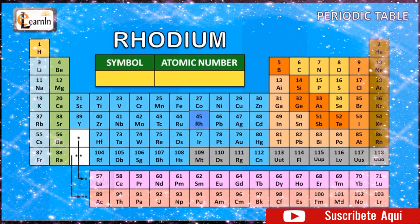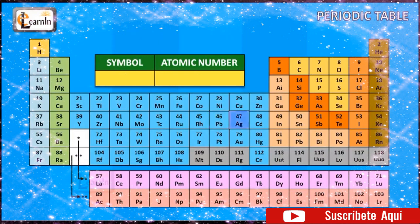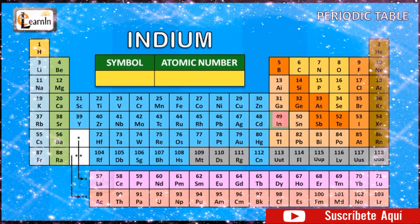The element palladium is represented as Pd and has an atomic number of 46. The element silver is represented as Ag and has an atomic number of 47. The element cadmium is represented as Cd and has an atomic number of 48. The element indium is represented as In and has an atomic number of 49. The element tin is represented as Sn and has an atomic number of 50.